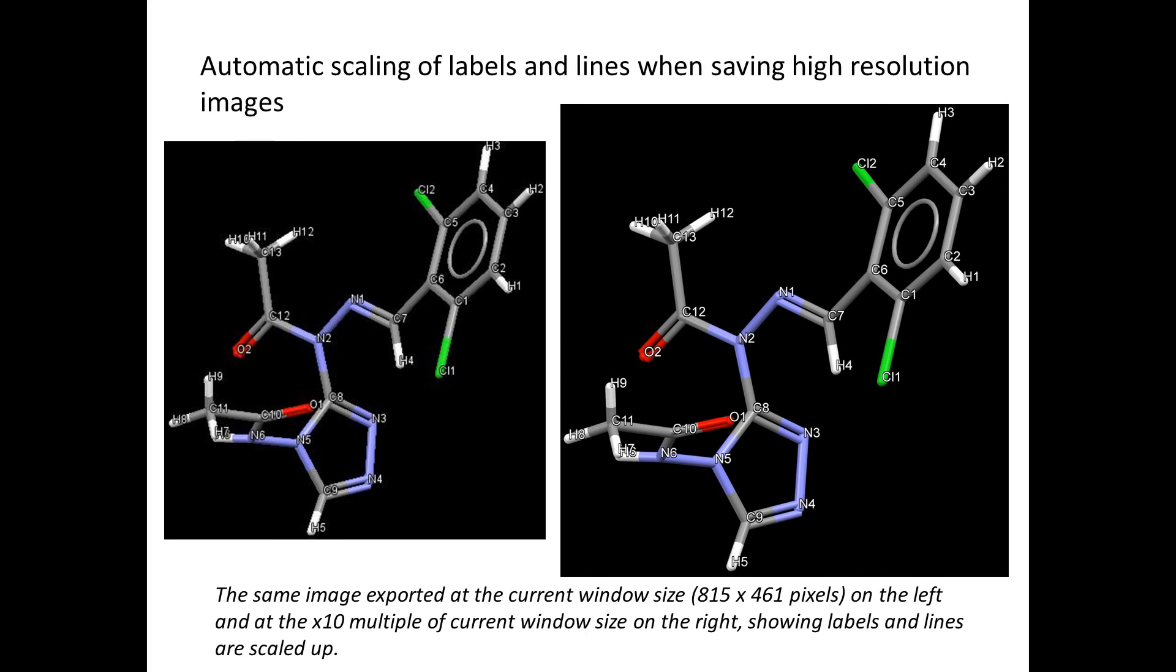We have also introduced automatic scaling of labels and lines when saving high resolution images. Here we're comparing on the left the same image exported at the current window size, and on the right the same image but at 10 times the multiple of that current window size. This shows that when you have a high resolution image, the labels and lines are completely scaled up.